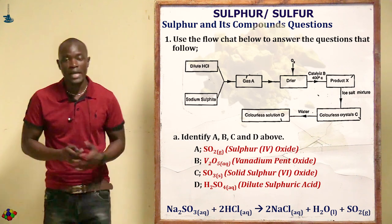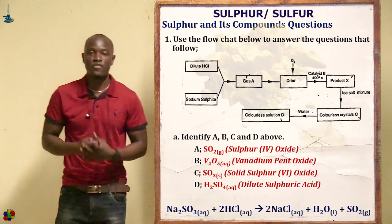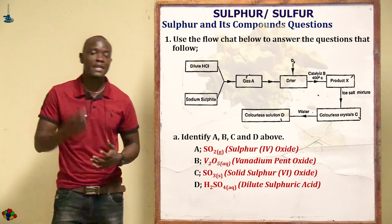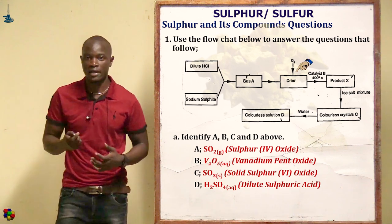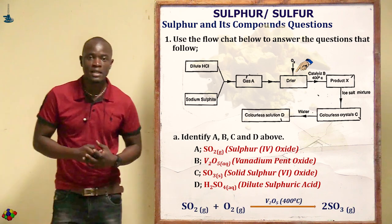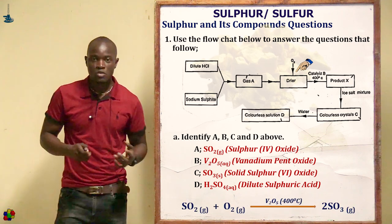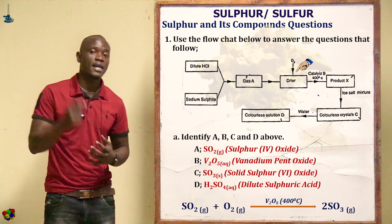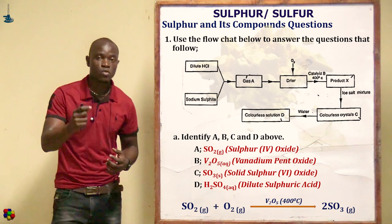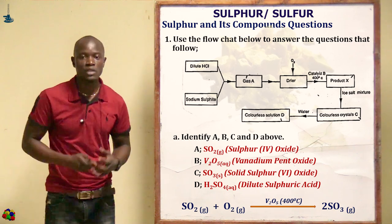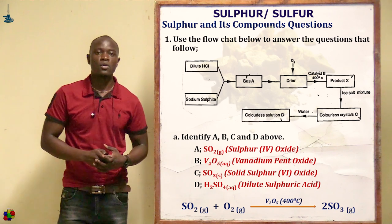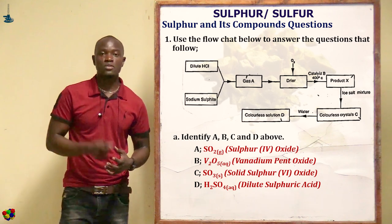So gas A is sulfur dioxide (SO₂). The sulfur dioxide then enters the dryer, where oxygen also enters. The gas then passes through the catalytic chamber to form product X.